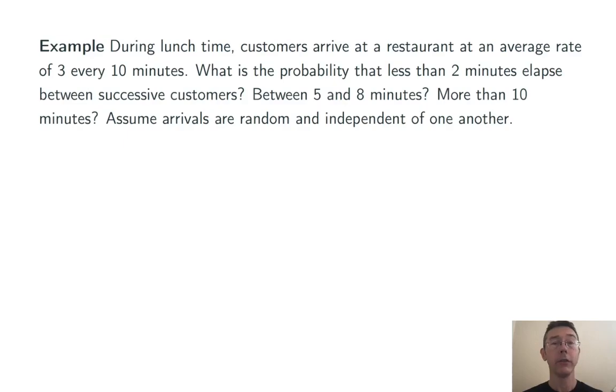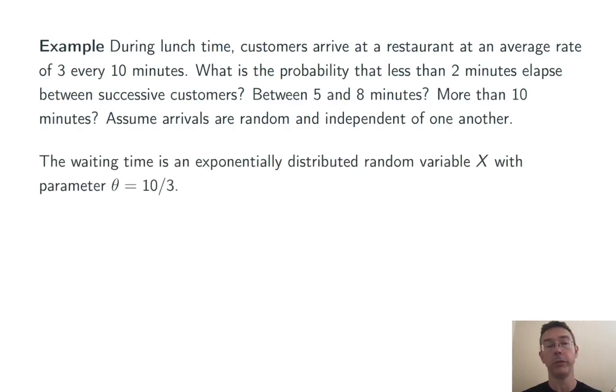During lunchtime, customers arrive at a restaurant at an average rate of 3 every 10 minutes. What's the probability that less than 2 minutes elapse between successive customers? Between 5 and 8 minutes? More than 10 minutes? We're going to assume that the arrivals are random and independent of one another. So this really is a Poisson process.